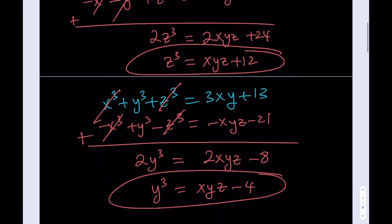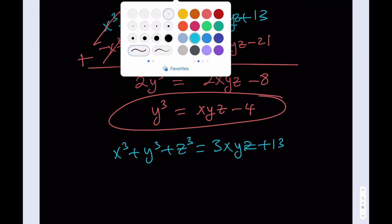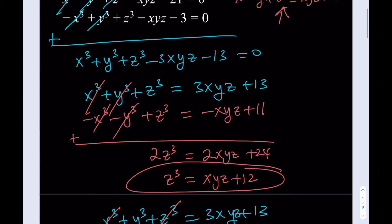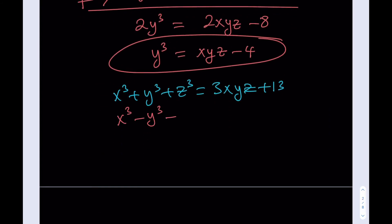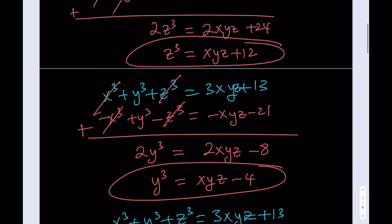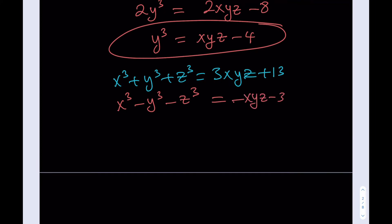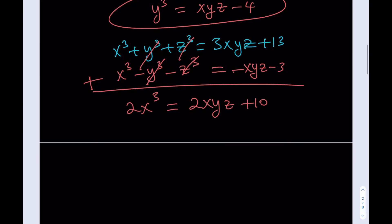Now I'll use the main equation — x cubed plus y cubed plus z cubed equals 3xyz plus 13 — one more time, with the third equation negated. Writing it as x cubed minus y cubed minus z cubed equals negative xyz minus 3, then adding to the main equation causes y cubed and z cubed to cancel, leaving 2x cubed equals 2xyz plus 10. Dividing by 2 gives x cubed equals xyz plus 5.